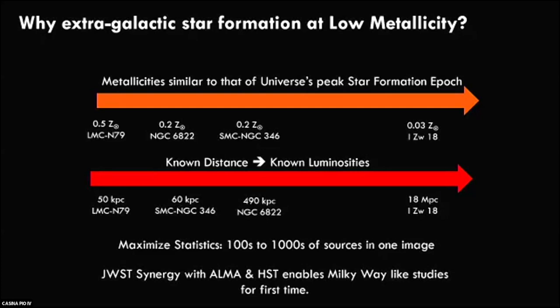As you go to the right, you're decreasing through the sample to the lowest metallicity, which is I Zw 18, about 3 percent the metallicity of the Sun. Another advantage of extragalactic star formation is you know the distance, and hence the luminosities, so you can really specify what the masses and constituents are. Because they're just far enough away, with JWST imaging you can get lots of statistics — in one image of NIRCam you get hundreds or thousands of sources, very efficient. We're studying star formation in a stellar population mode. JWST has really opened up the door to studying this type of star formation for the first time because of its really good image quality and sensitivity, and you can combine it with other observatories like ALMA and HST to do Milky Way-type star formation studies nearby.